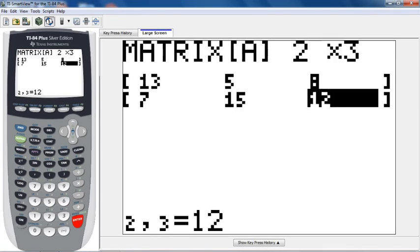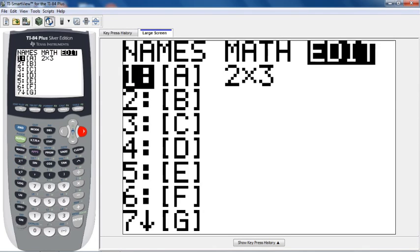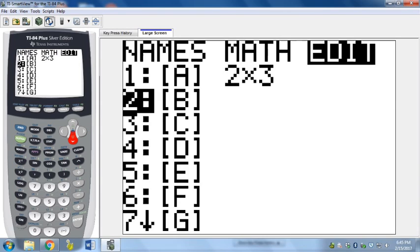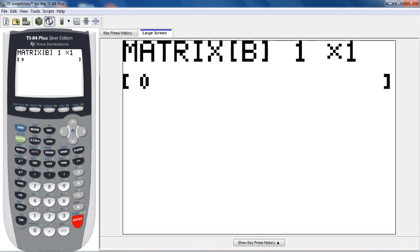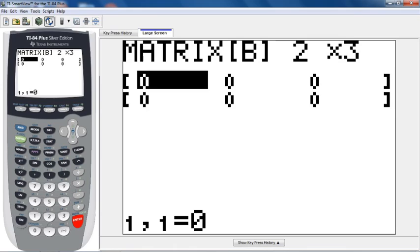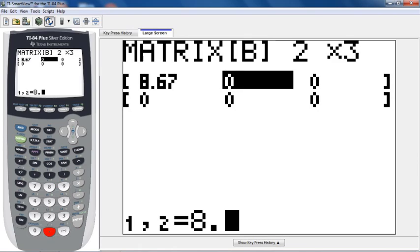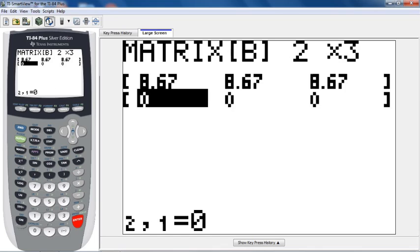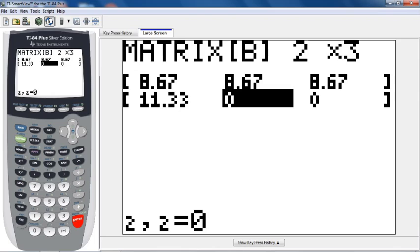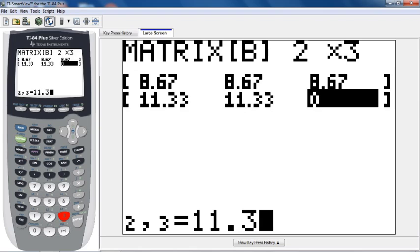Now let's go ahead and go back to matrix B. So let's go edit matrix B. Matrix B starts out as a one by one also. So again, let's make it a two by three and enter our expected counts. So we just calculated these. It was 8.67, another 8.67, one more 8.67 up top there, and then 11.33 for the bottom row each cell.